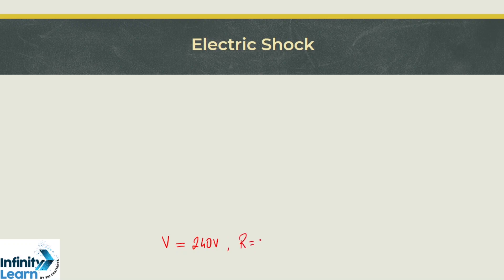Now if in this case, if we again assume the resistance to be 1 lakh, the amount of current flowing will be how much? It will be V by R which is 240 divided by 1 lakh and this will come out to be 0.0024 ampere.